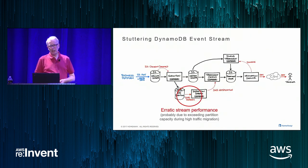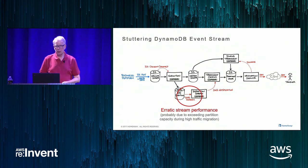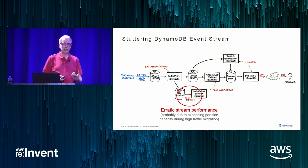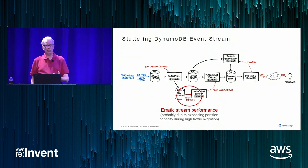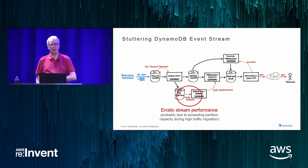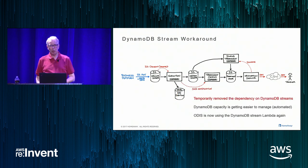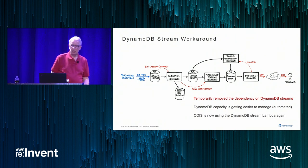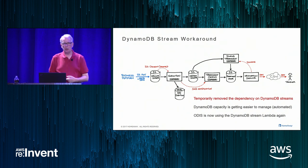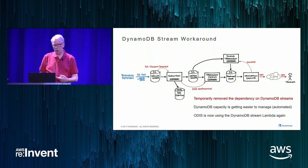We had some stuttering performance with DynamoDB streams early on — I'm pretty sure that was because we hadn't configured our capacity correctly. That's easier today with auto scaling, which didn't exist back then. We worked around it by having the induction Lambda write SNS notifications itself instead of depending on the DynamoDB stream. Today we're going back to using the DynamoDB stream Lambda — things have calmed down, we understand what's going on better, and our partitions are no longer changing.